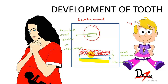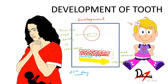The oral ectoderm contacts the endoderm via a membrane called the buccopharyngeal membrane. At the 27th day of pregnancy, this buccopharyngeal membrane ruptures, and now our oral ectoderm is in contact with the endoderm of the foregut.